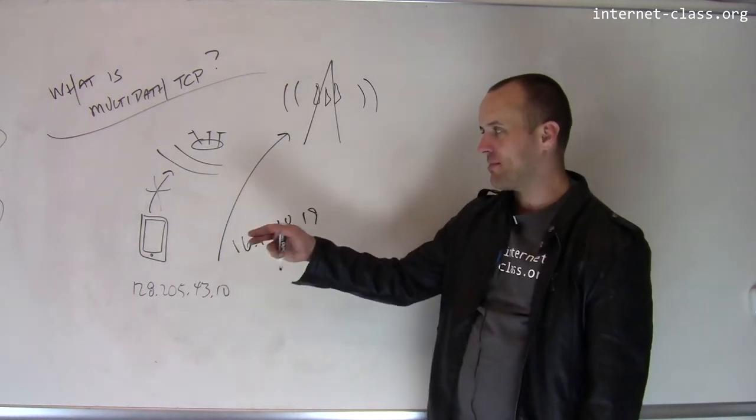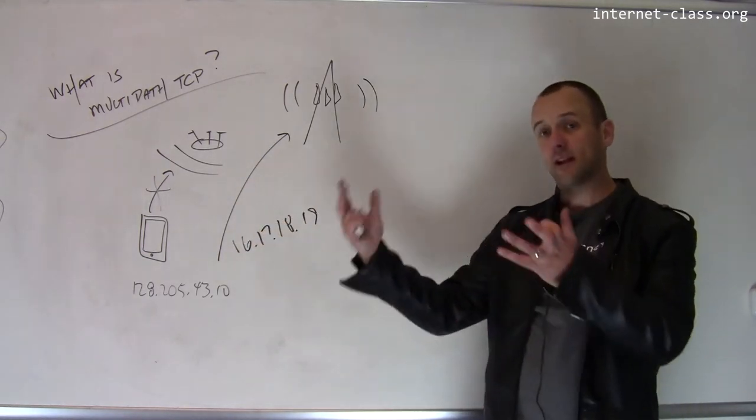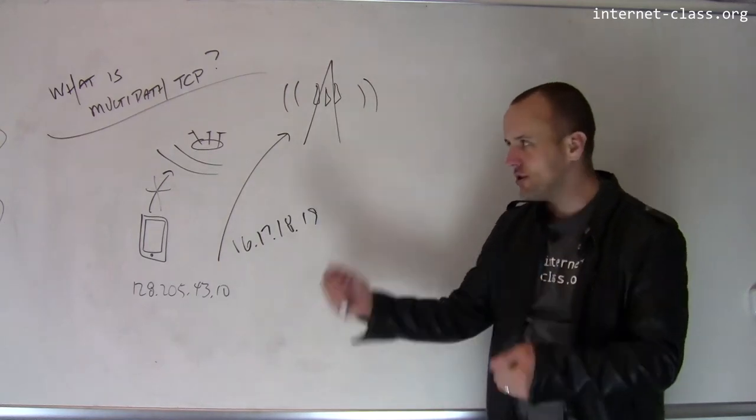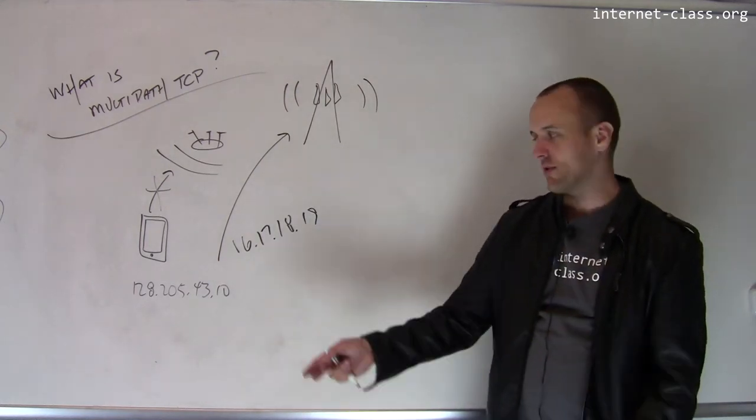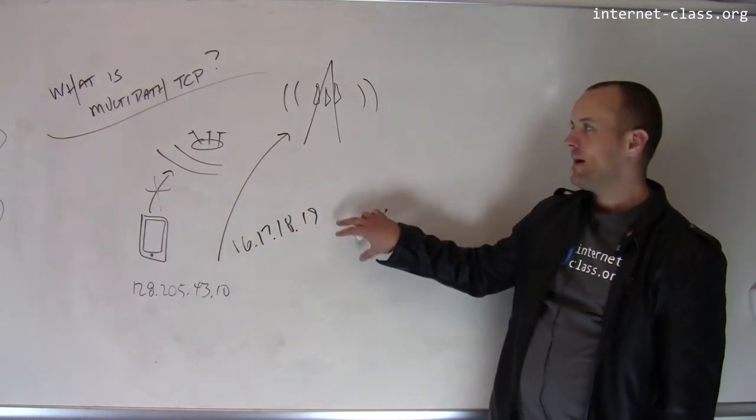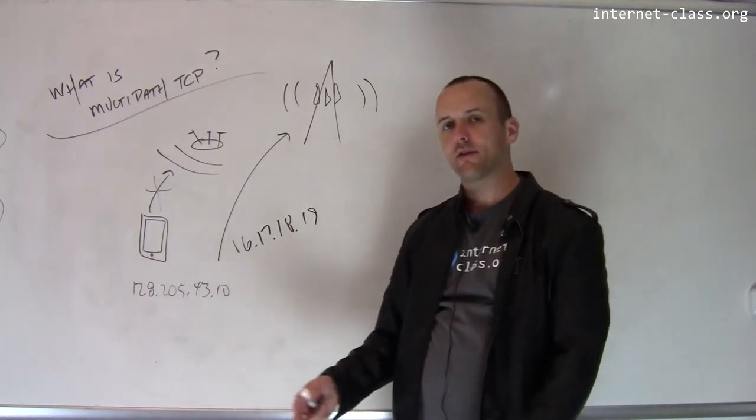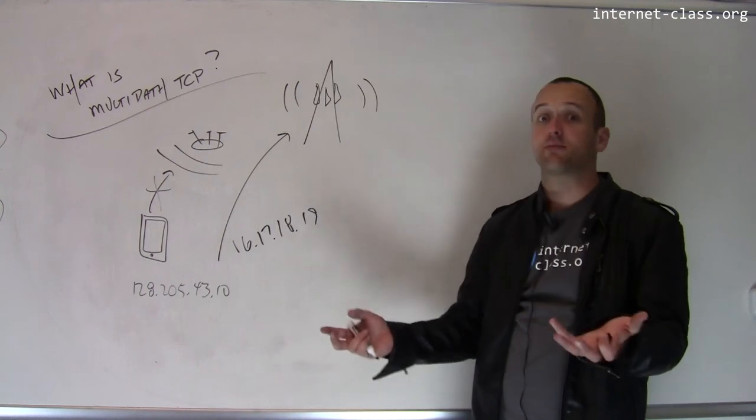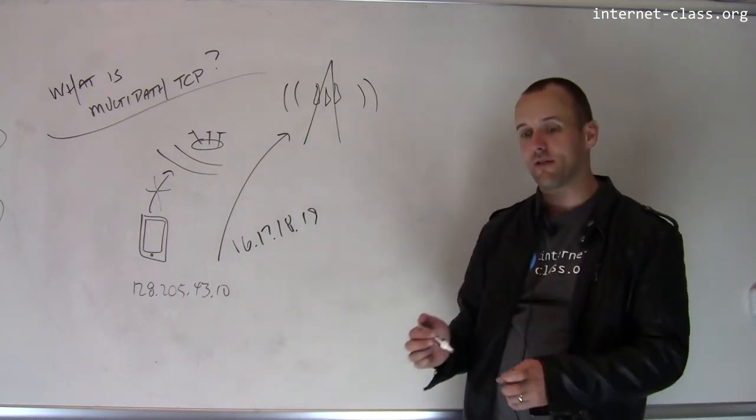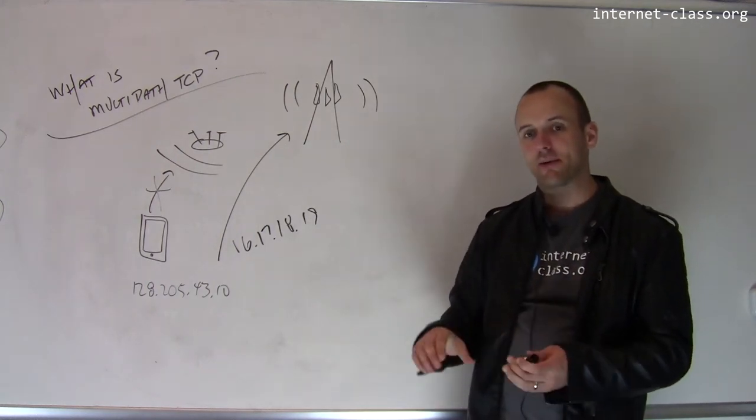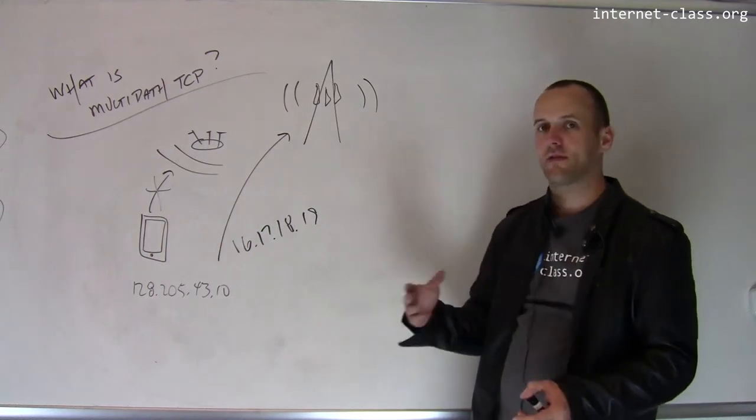And so typically what has to happen is the player has to notice that the network has changed and reestablish a new network connection with the same server using this new IP address and then try to recover the stream. This can cause interruptions in playback. You may have noticed this if you stream content in this type of scenario.